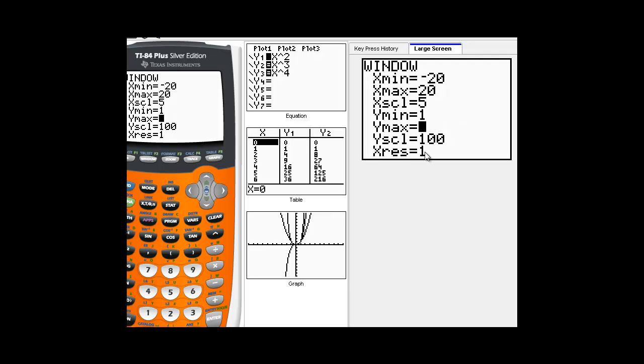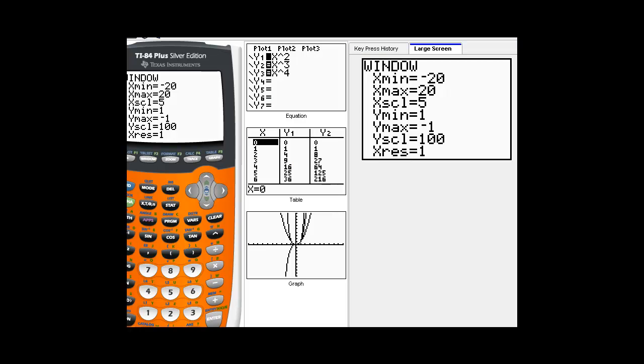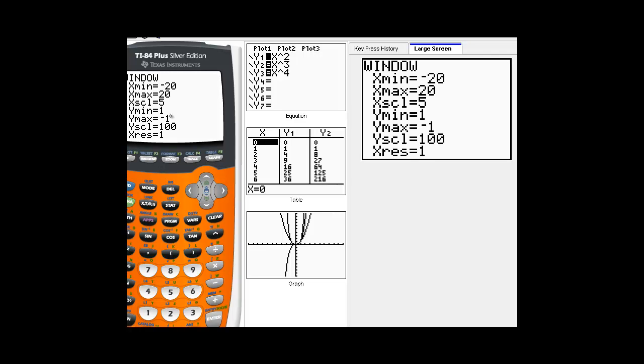But graphing works just to see what's going on here. Now, I should set my window, my y min, to negative 1, so I'll accidentally get an error right there. So let me set my, I have 1 for the min and negative 1 for the max. I should swap that. So I'm going to put negative 1 for the min, 1 for the max.